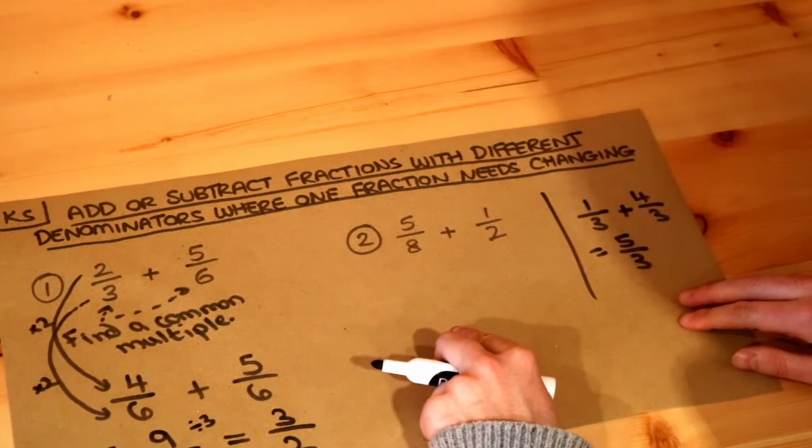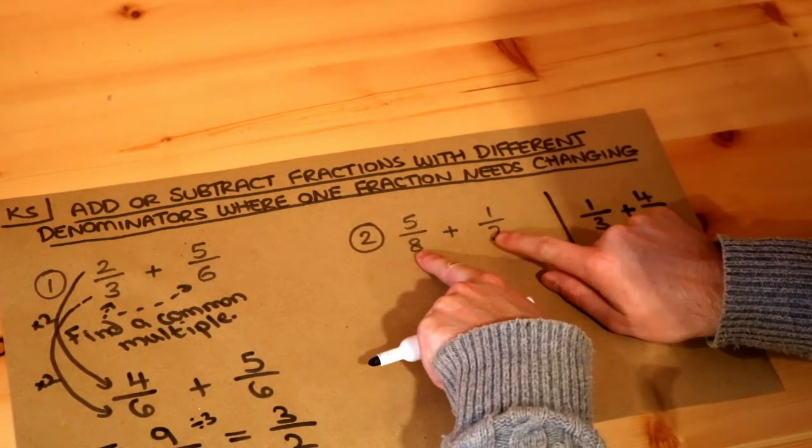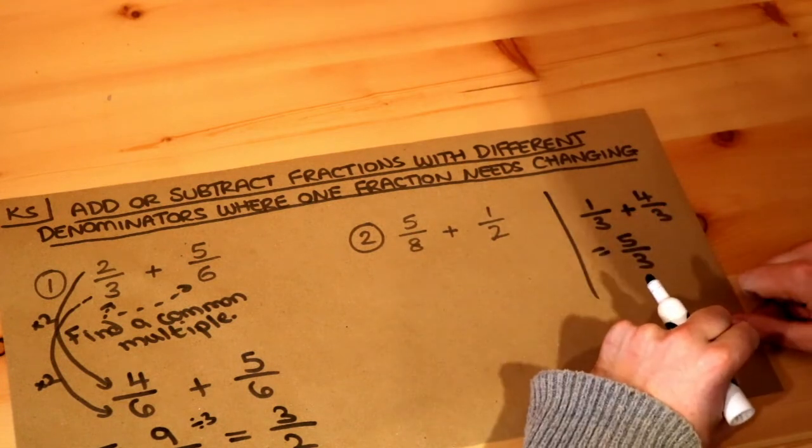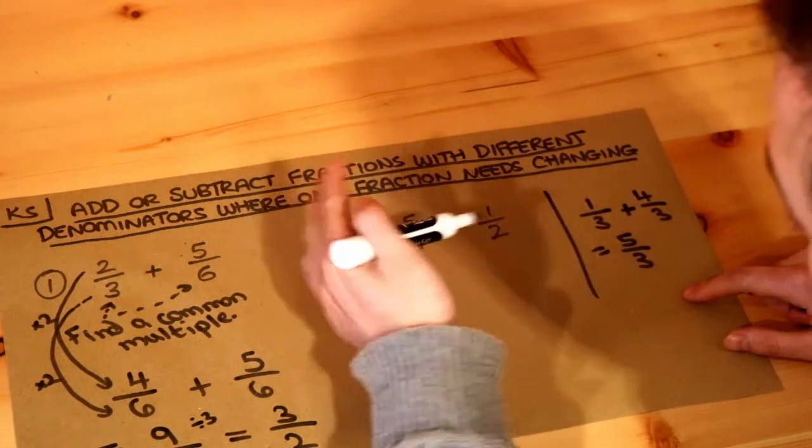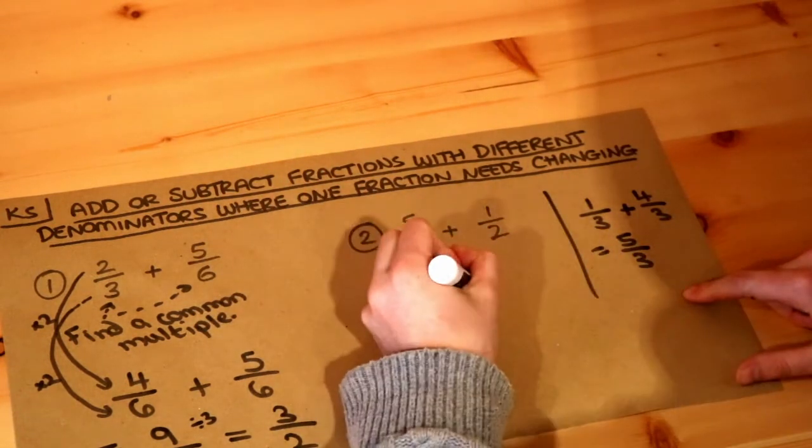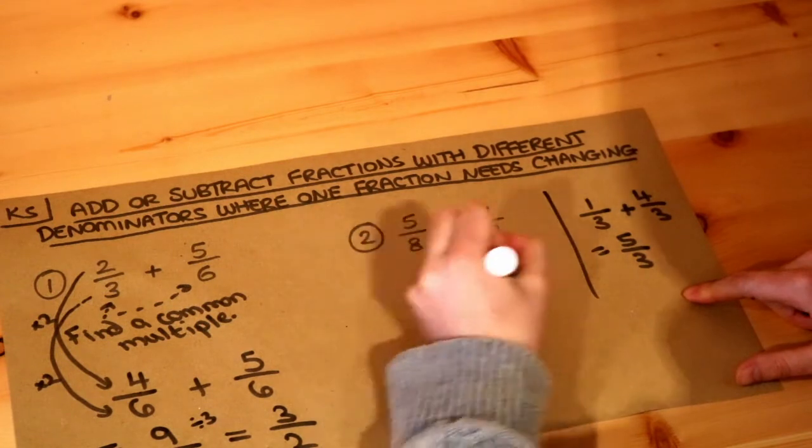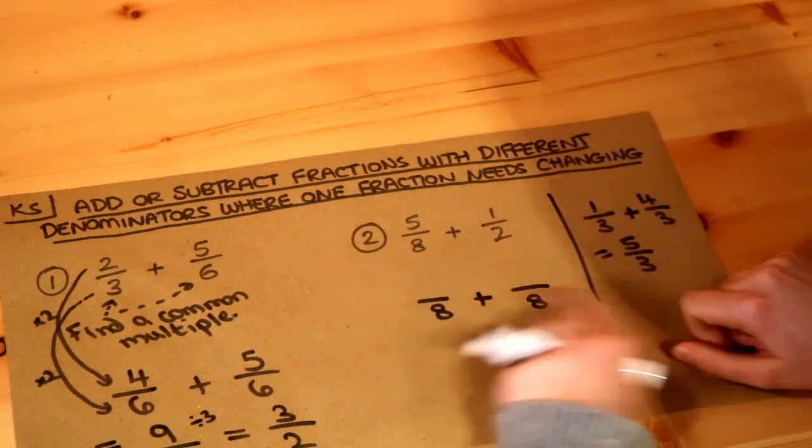What about this next one? Again we've got to find a common multiple of the two denominators, eight and two. What do they both go into? Well two goes into eight. Eight goes into eight because it's itself and two goes into eight. So we're going to put both of these fractions over eight. We found a multiple of both of these numbers that's the same.